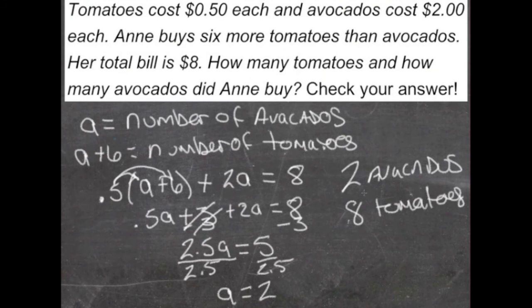If that's the case, then the 2 avocados each cost 2 dollars, that would be 4 dollars. And the 8 tomatoes each cost 50 cents, that would be another 4 dollars. Those 2 prices together should equal the total amount that she spent. She spent 8 dollars.